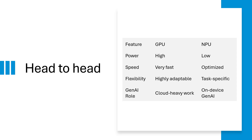Think of GPUs as the muscle and NPUs as the ninja. GPUs handle giant generative AI models, while NPUs are lean and perfect for local use, like smartphone assistants.